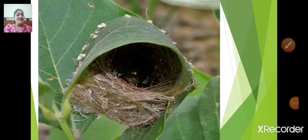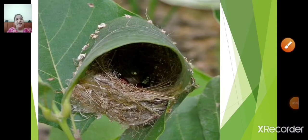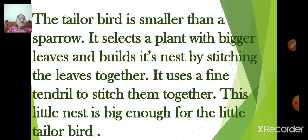This little nest is big enough for the little tailor bird. The tailor bird is smaller than a sparrow. It selects a plant with bigger leaves and builds its nest by stitching the leaves together, using a fine tendril to stitch them together.